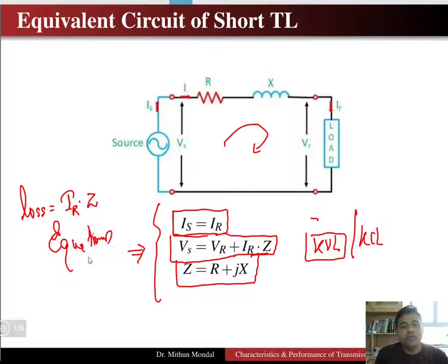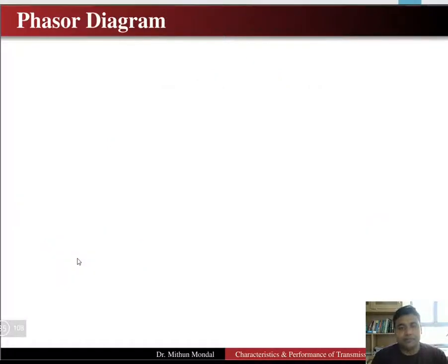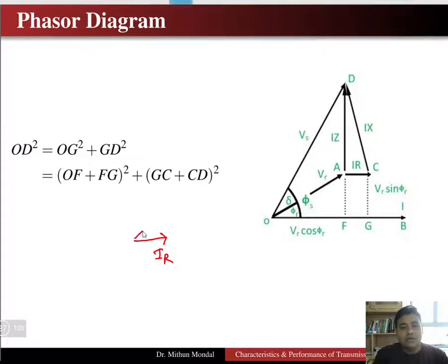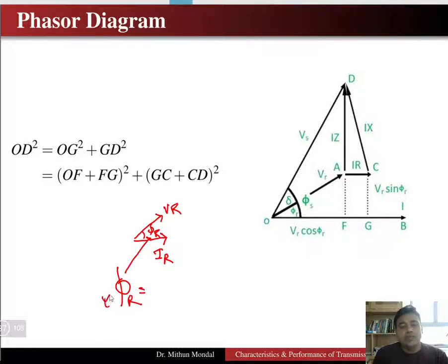Three equations are used to define any short transmission line. In the phasor diagram, we take the receiving end current IR as the reference phasor. The receiving end voltage VR will lead the receiving end current IR by an angle phi_R, which is the receiving end power factor angle. So cos(phi_R) is the receiving end power factor.